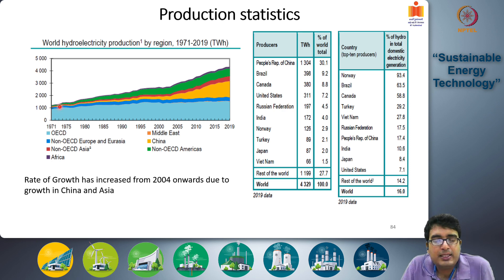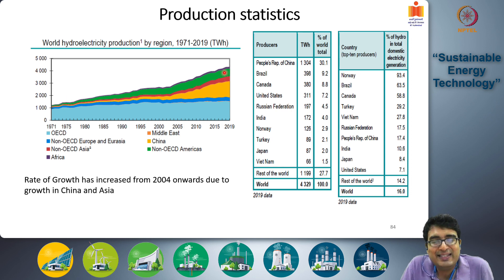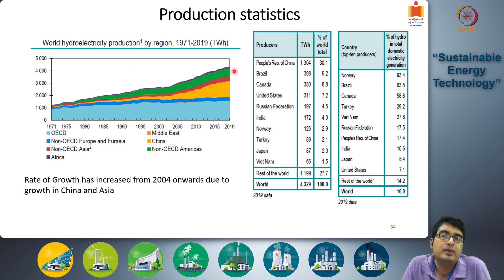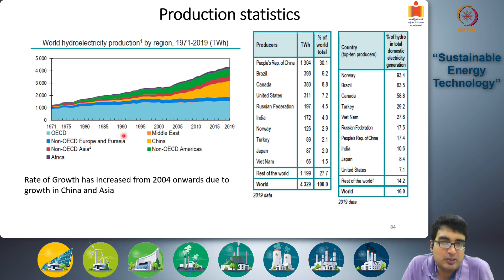What we see here is that in 1971 around 1000 terawatt hours of hydroelectric power was generated worldwide, and today this has increased four times to around 4000 terawatt hours of electricity. The figure also shows the regional contributions in terms of different regions of the world.